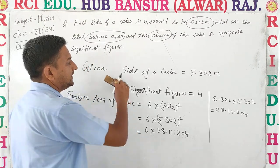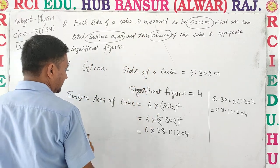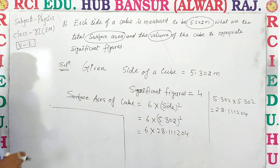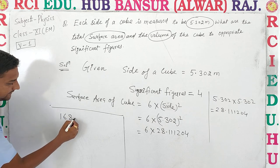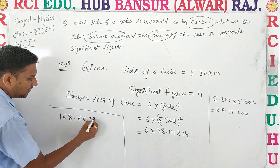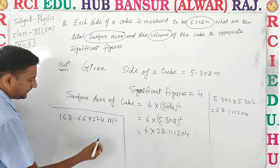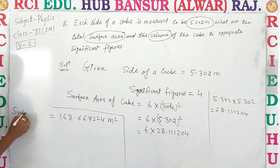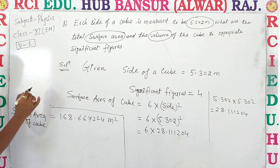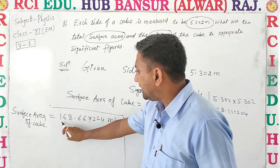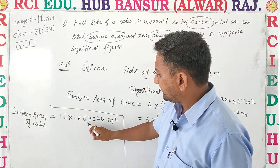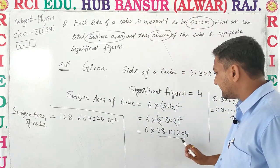अब इसको 6 से multiply करेंगे। यहाँ write कर देता हूँ। तो इसका answer आता है 168.667224 meter square. यह आ गया surface area of cube.